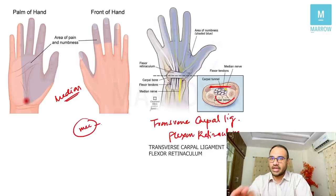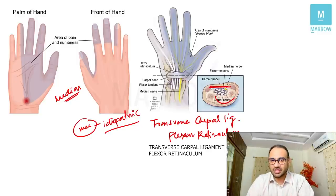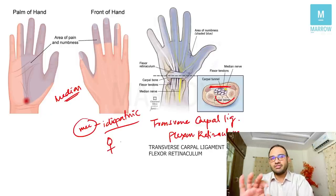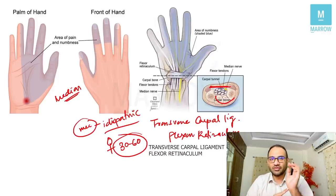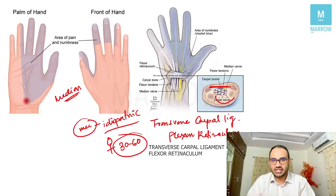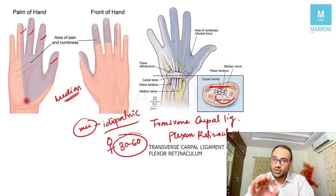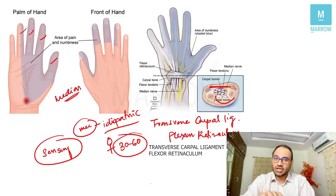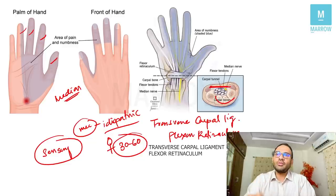The most common cause of carpal tunnel syndrome is idiopathic. Other causes include hypothyroidism, rheumatoid arthritis, diabetes, and pregnancy. It occurs more commonly in females, in the middle age group of 30 to 60. Because of entrapment of the median nerve, the patient will have paresthesia, tingling, numbness, and burning sensation in the distribution of the median nerve — fingers 1, 2, 3, and a half. Early symptoms are sensory; later symptoms are motor, and when motor symptoms appear, the prognosis is poor.